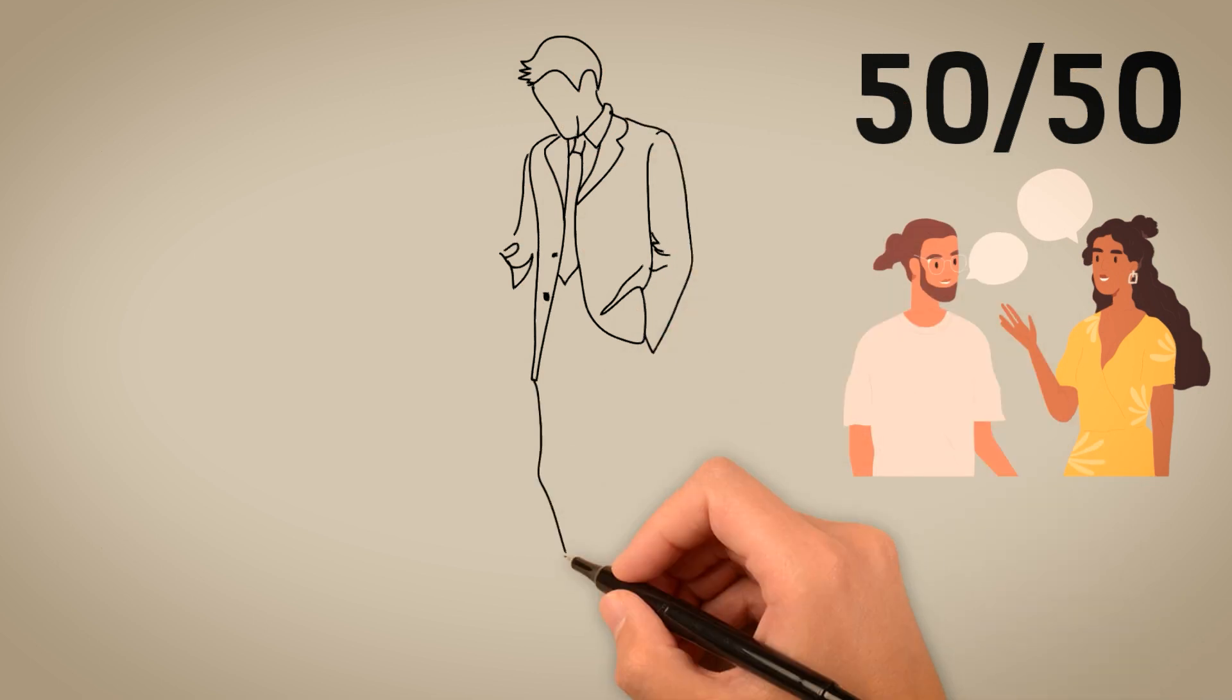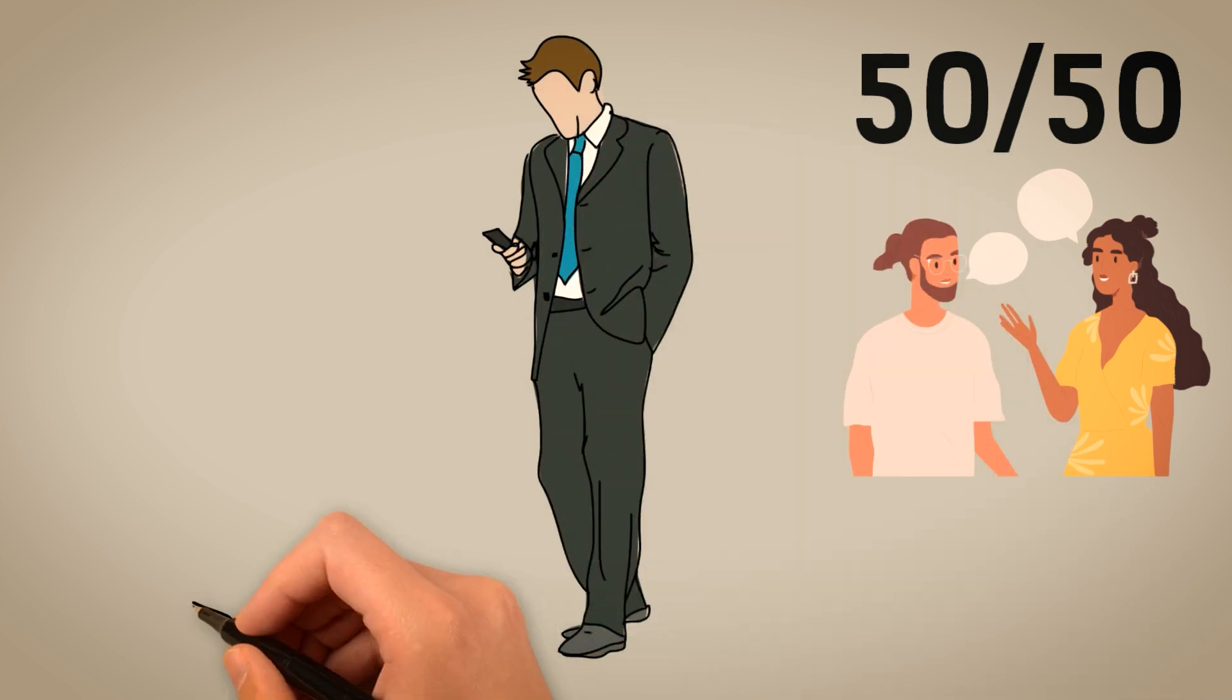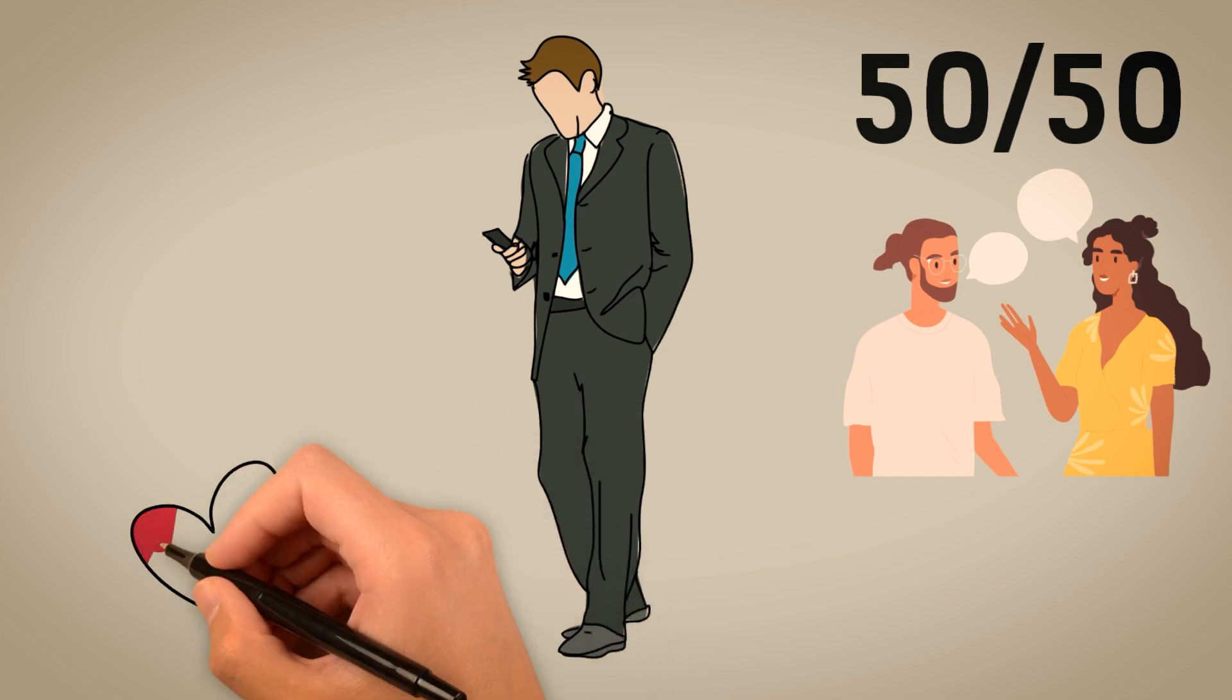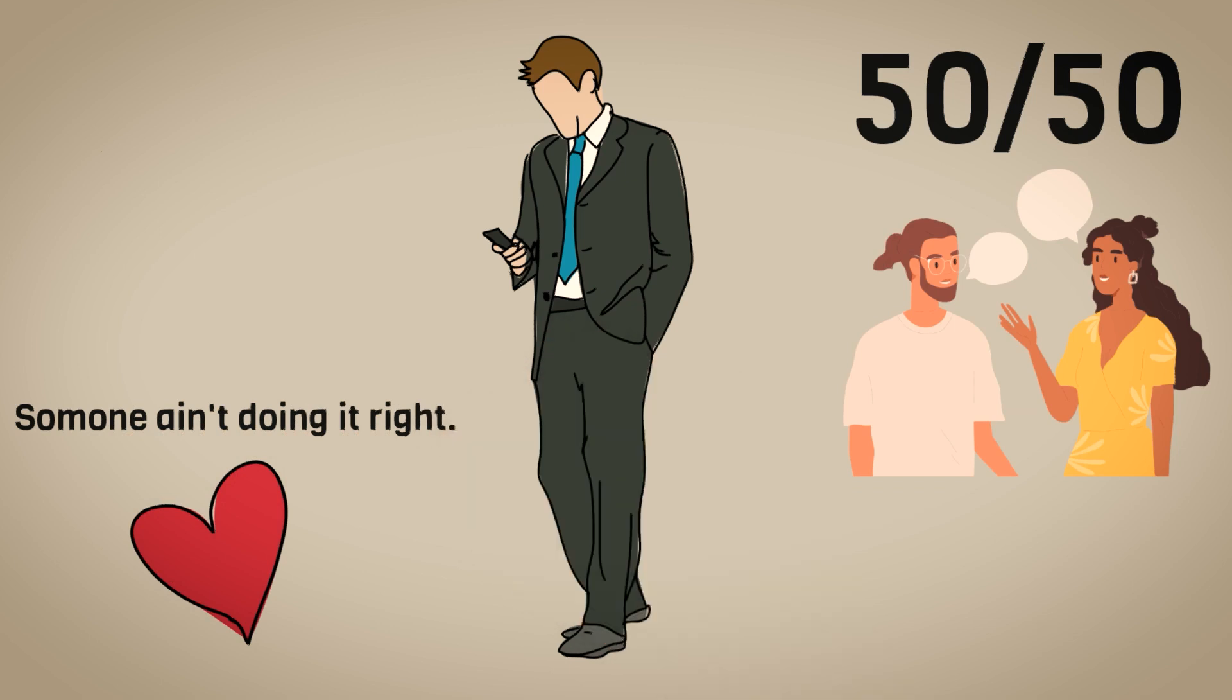When the relationship does not fulfill or meet the purpose of genuine love, care, attention, and affection, it simply means that either of the parties ain't doing it right, or either of the parties is in the relationship for his or her benefit.